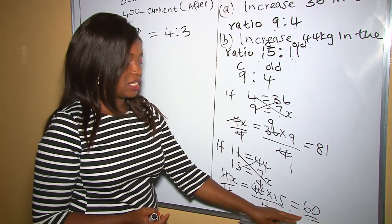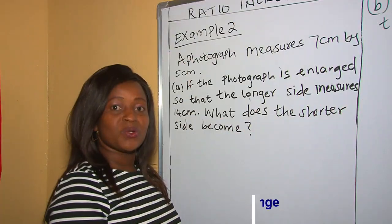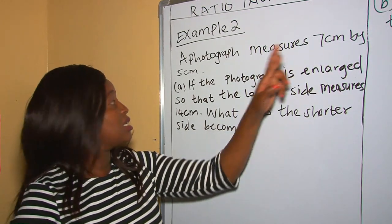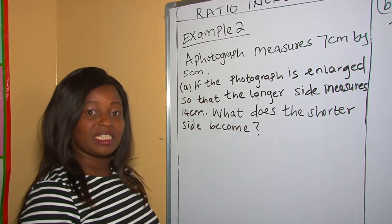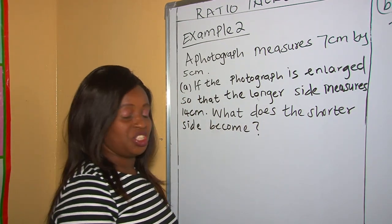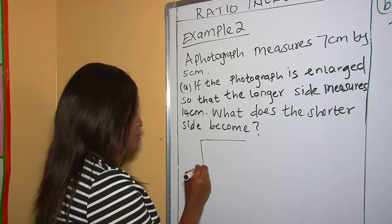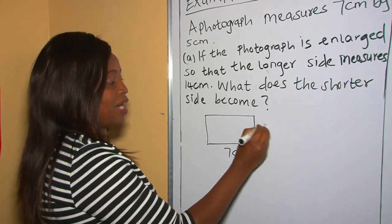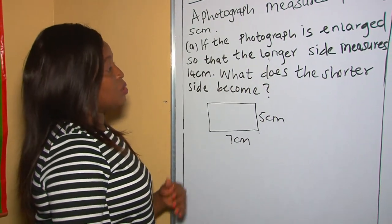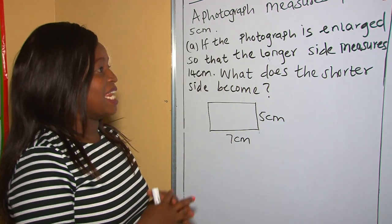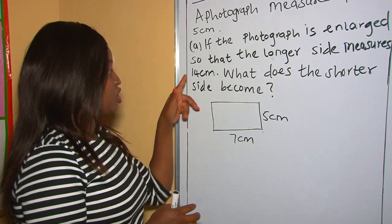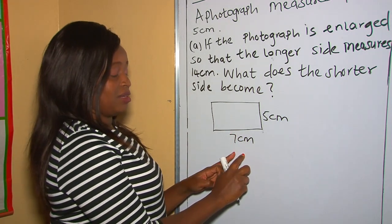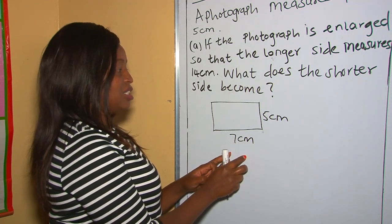Now let's do Example 2, which is a word problem. We are given a photograph that measures 7 centimeters by 5 centimeters, meaning it is rectangular in shape. The length is 7 centimeters and the width is 5 centimeters. We are told the photograph is enlarged so that the longer side measures 14 centimeters. So the length of 7 has been enlarged to become 14.